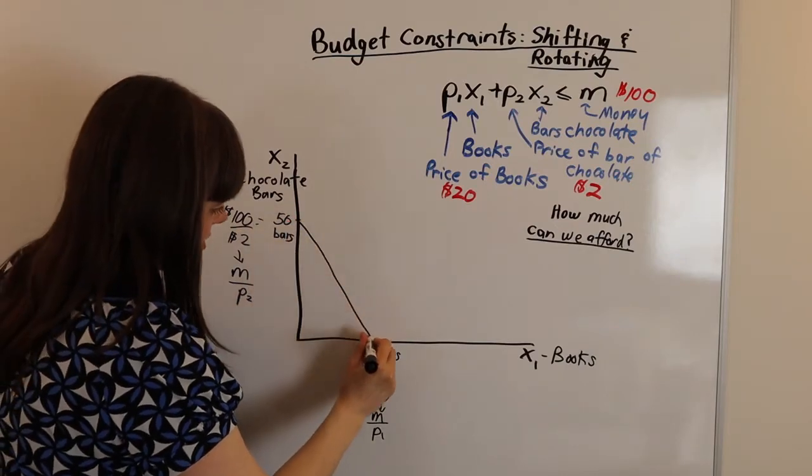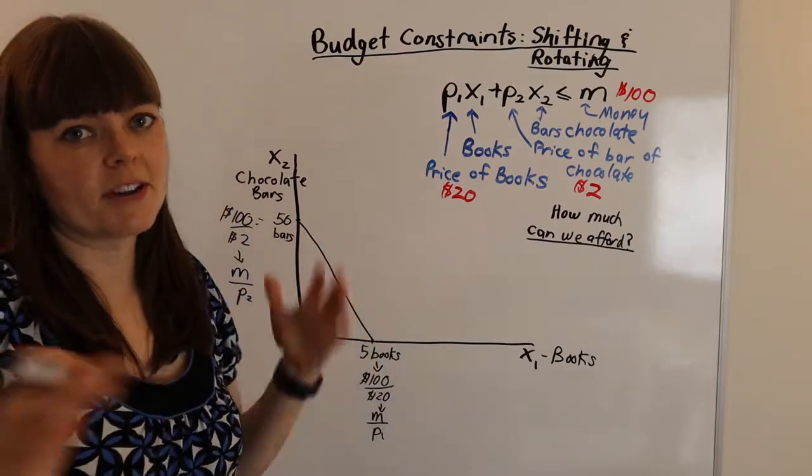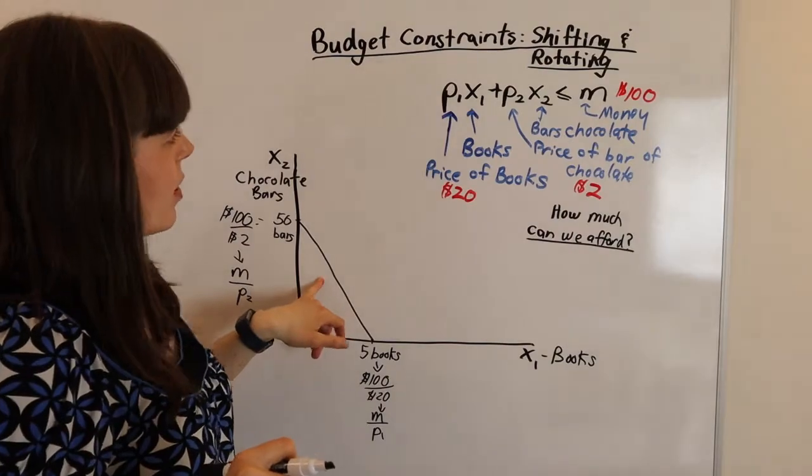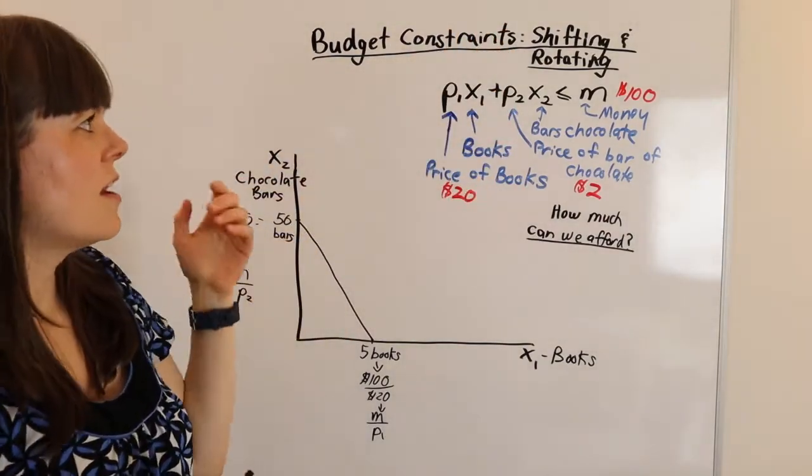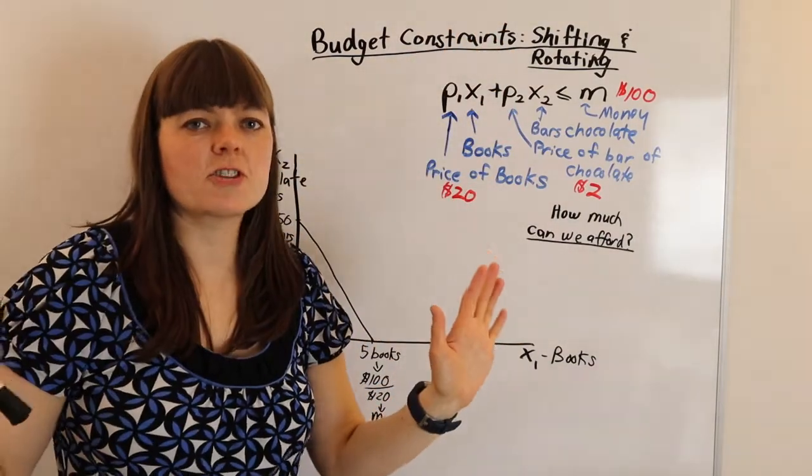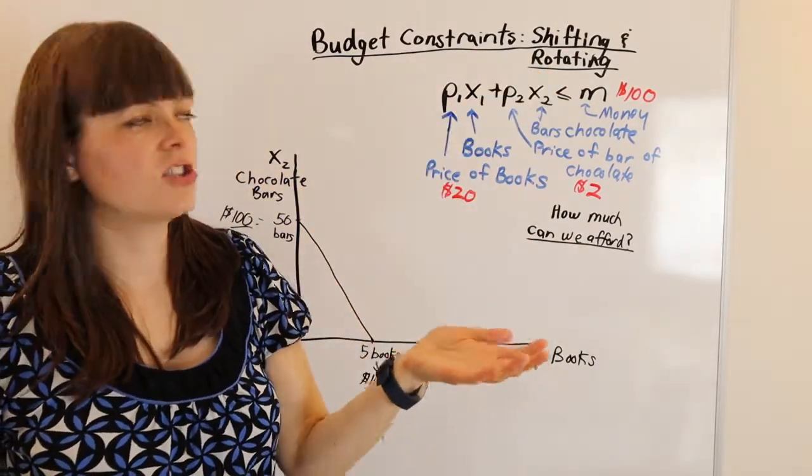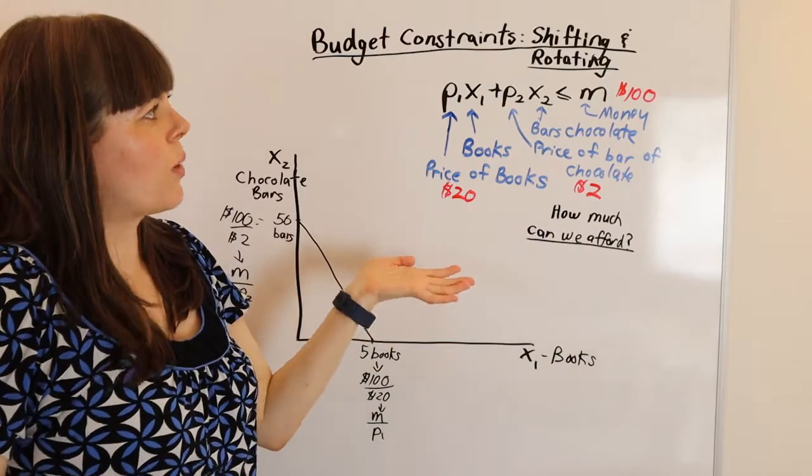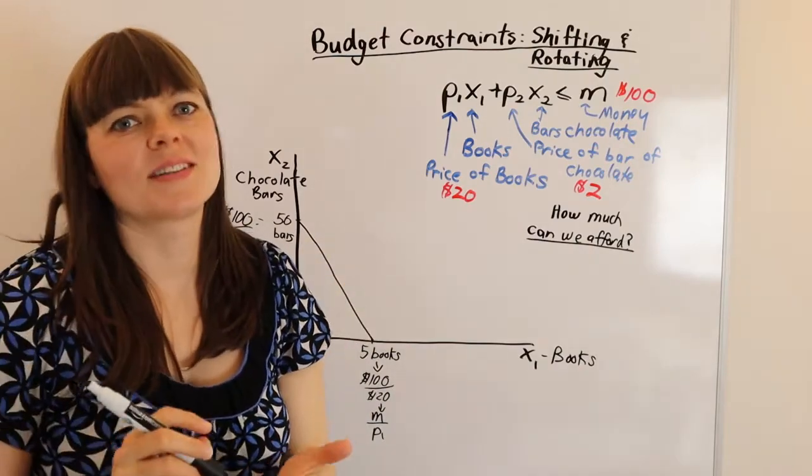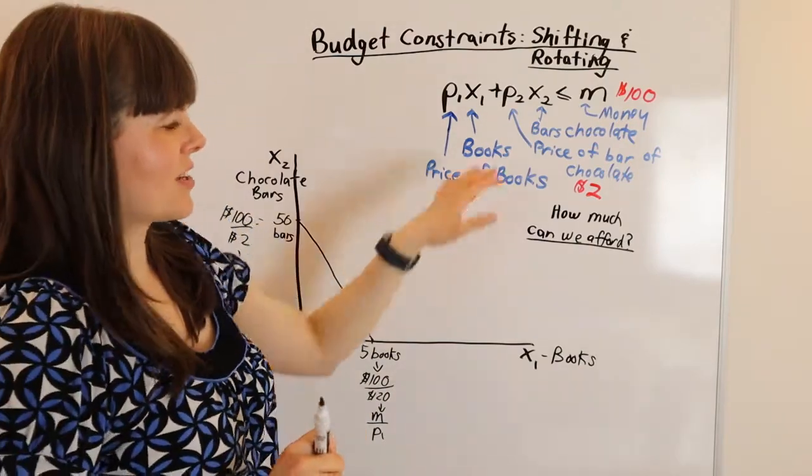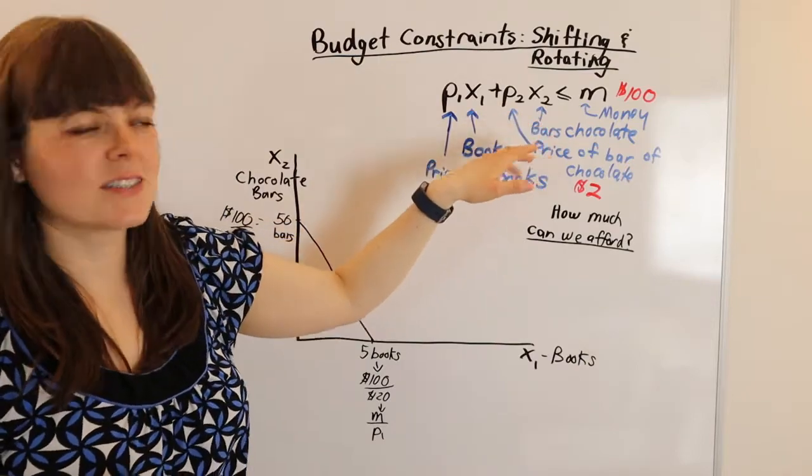Those are our intercepts. We know that the budget constraint is linear. I talked about that in another video. So here we're really trying to figure out does it shift or rotate? So to start out with, let's imagine that you have an exam and it's just asking, when does the budget constraint shift and when does it rotate? And there's kind of only really two options here.